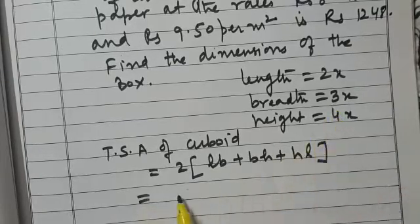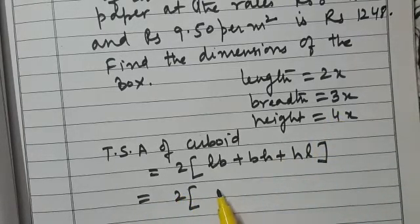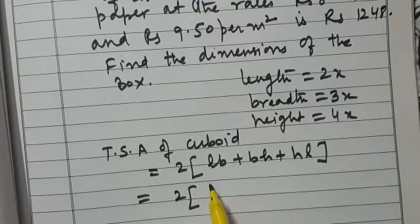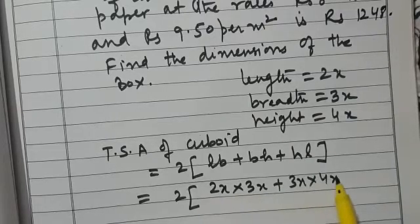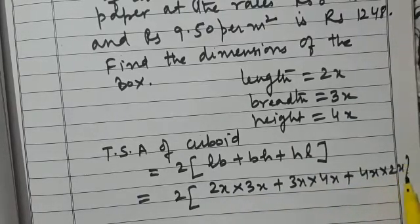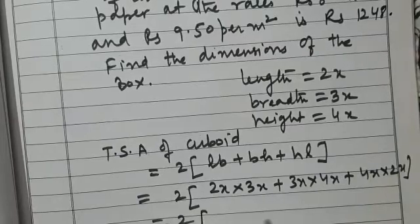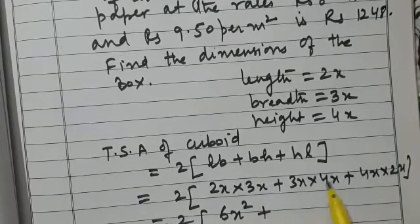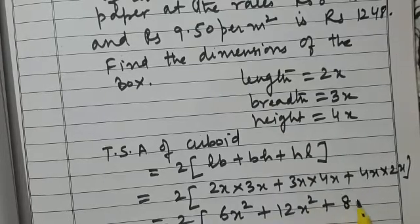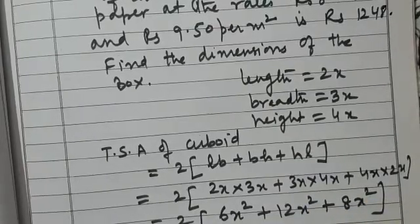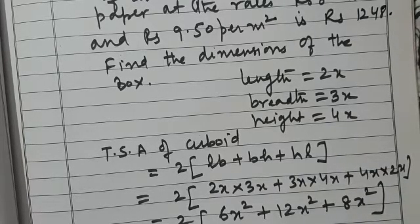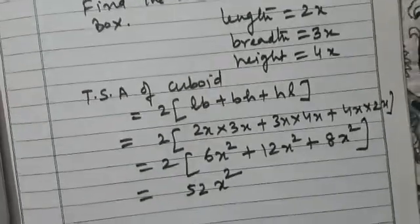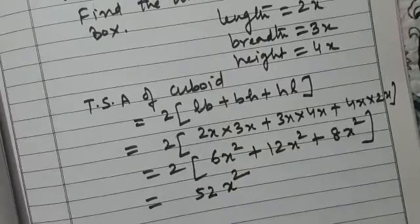Now substitute these values to find the total surface area of the box. So 2(2x × 3x + 3x × 4x + 4x × 2x). That gives us 2(6x² + 12x² + 8x²). After simplification, we get 52x².